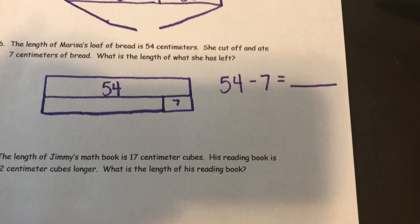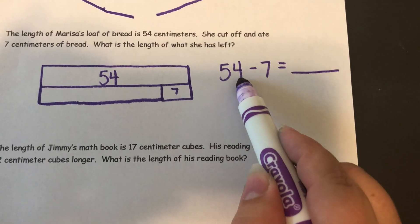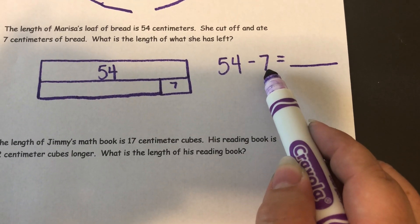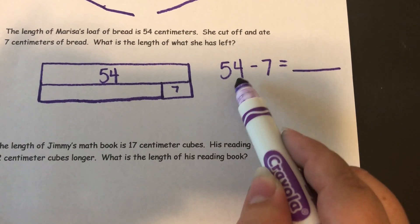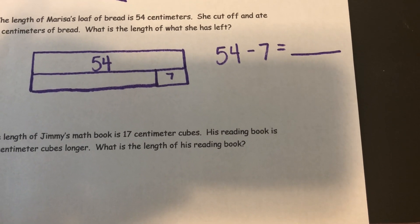Alright, so if I go to subtract like units, I have 4 ones and I would need to take away 7 ones. But I can't do that because 4 is not big enough. So I'm going to use my take a 10 strategy.